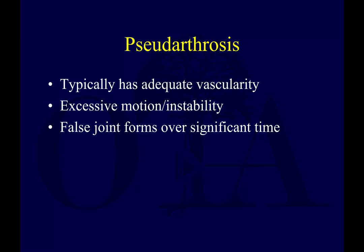Pseudarthrosis, or so-called synovial pseudarthrosis, is when you have a fracture where the canal is kind of sealed off, and you develop a synovial-type pseudocapsule. This is typically somewhat fluid filled, forming a pseudoarthrosis — a false joint that develops over time.